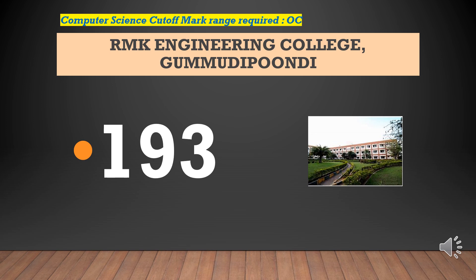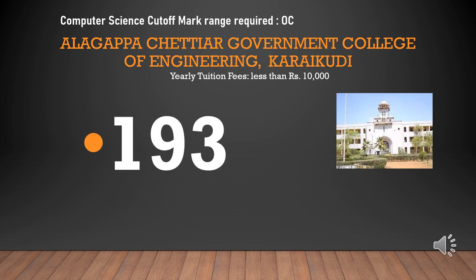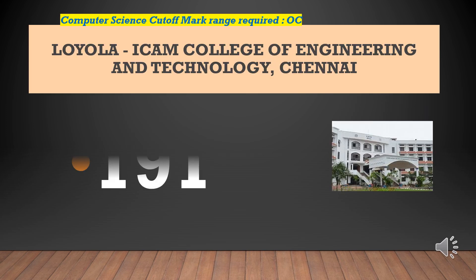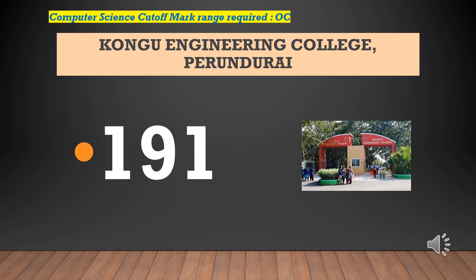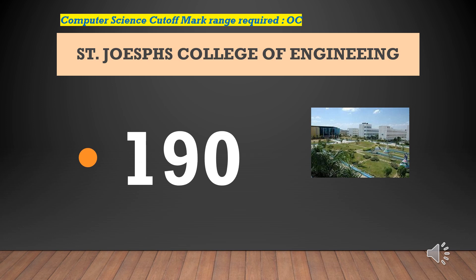Alagappa Chettiar Government College of Engineering — cut-off required for CSEOC is 191. Kongu Engineering College — cut-off required for CSEOC is 191. St. Joseph's College of Engineering — cut-off required for CSEOC is 190.